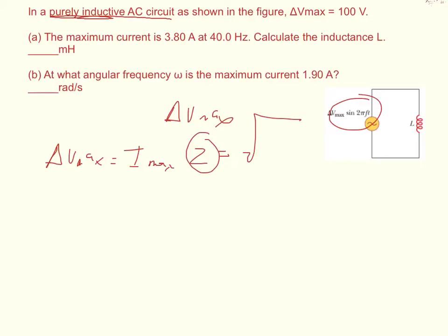Where Z is equal to the square root of R squared, plus the inductive reactance minus the capacitive reactance squared. And so since this is a purely inductive circuit, that's zero, and that's zero.